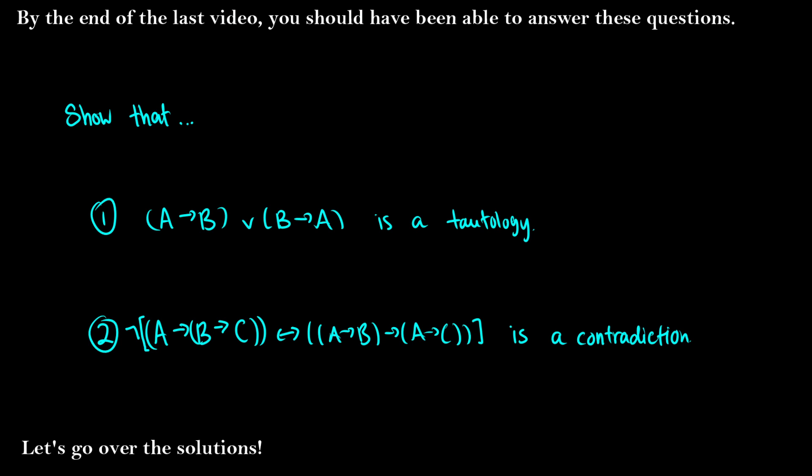In this video there are two exercises that you should have been able to do by the end of the last video: show that one is a tautology and two is a contradiction. We're going to go over the answers to those questions.